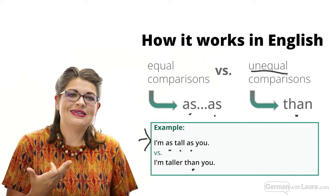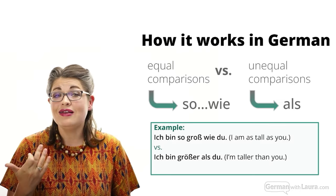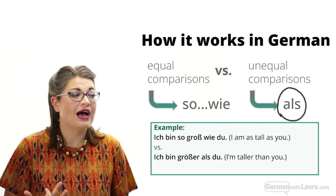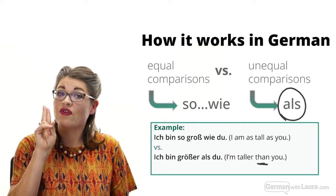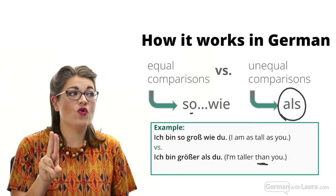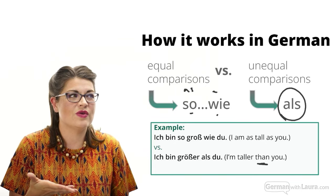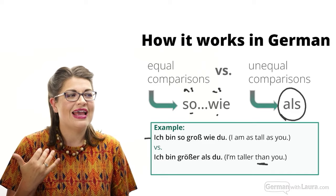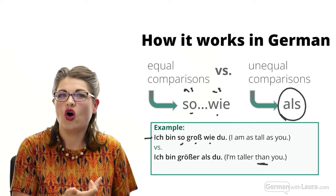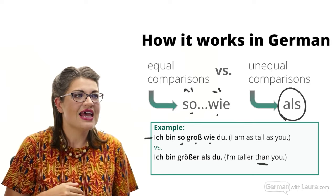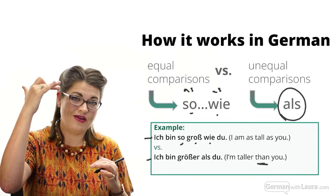The good news is the same concept applies in German. For unequal comparisons, we use the word 'als,' which lines up with 'than.' For equal comparisons, we use 'so...wie' — two separate words, unlike the repeated 'as' in English. So: 'Ich bin so groß wie du' means 'I am as tall as you,' and 'Ich bin größer als du' means 'I am taller than you.'